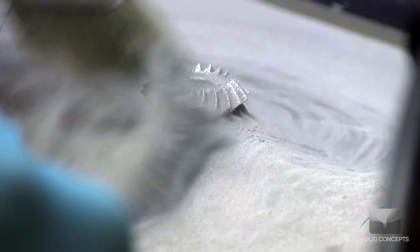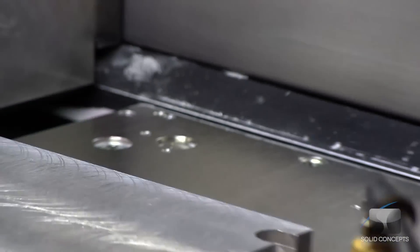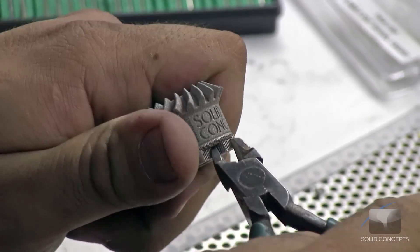As the part is built, support structures are added to give supplemental strength to fine features and overhanging surfaces. The completed part is then removed from the base plate and treated with an age-hardening heat process to further harden the part. Any support structures are also removed at this time.